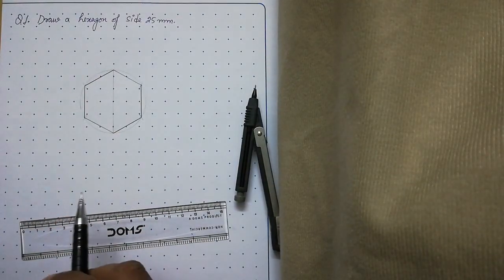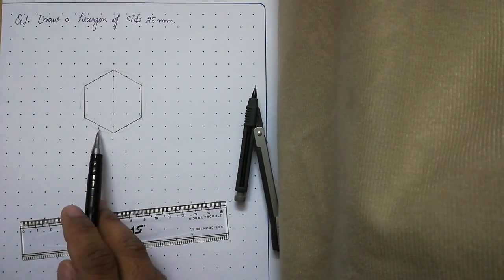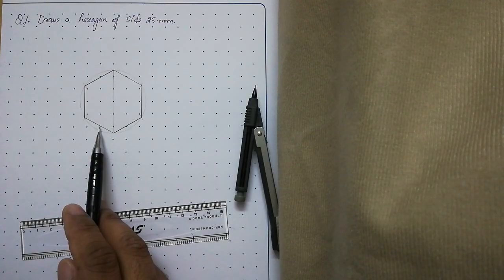Now you see we have the shape of a hexagon whose side is 25 millimeters.